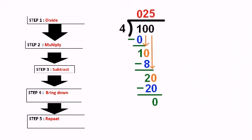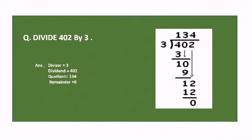We subtract: 1 minus 0 equals 1. Bring down the next 0 to get 10. Since 4 twos are 8, we write 8 and subtract: 10 minus 8 equals 2. Bring down the next 0 to get 20. Since 4 fives are 20, the division is complete with remainder 0.